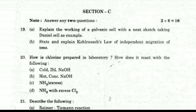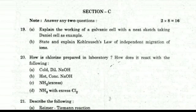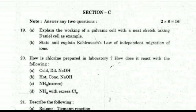Coming to the short questions, these are the eight mark answers. Section C, nineteenth question. Part A: Explain the working of a galvanic cell with a neat sketch taking Daniel cell as example. Part B: State and explain Kohlrausch's law of independent migration of ions.